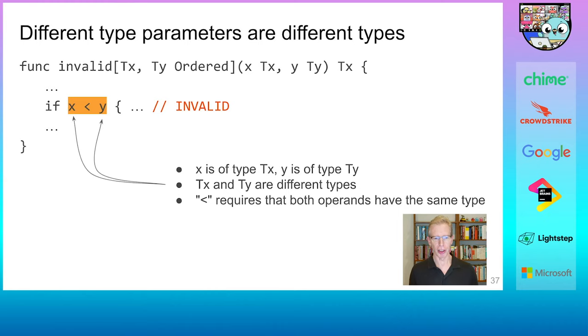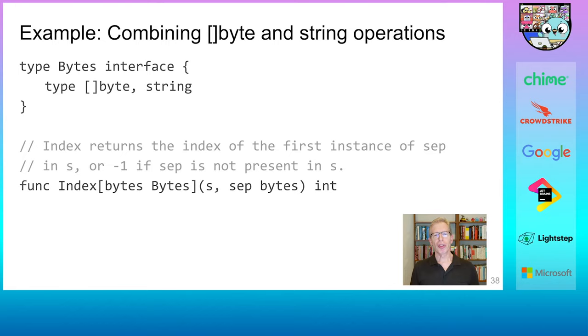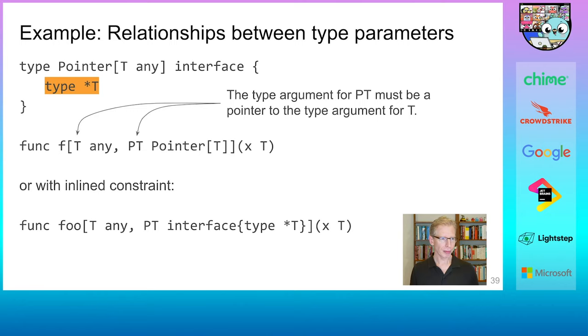Here is another more interesting example of type list use. With a constraint that accepts both slices and strings, we can combine separate functions operating on either byte slices or strings into a single generic function that accepts either type. Because both slice of byte and string in the bytes constraint support indexing, and because in both cases indexing returns a byte element, and also the built-in function len is supported, the index function has all the machinery and operations it needs so it can be implemented.